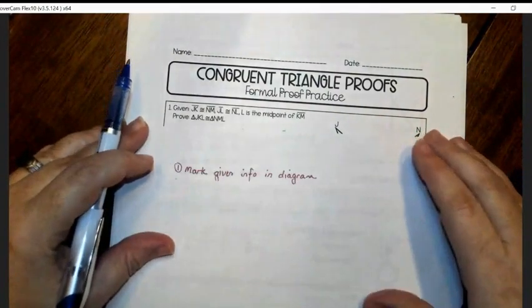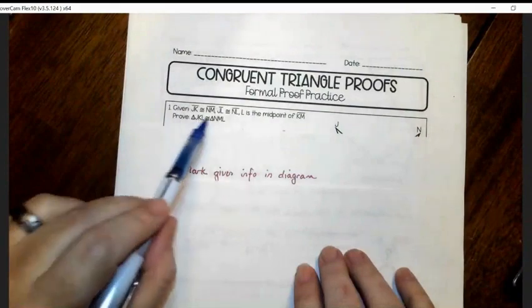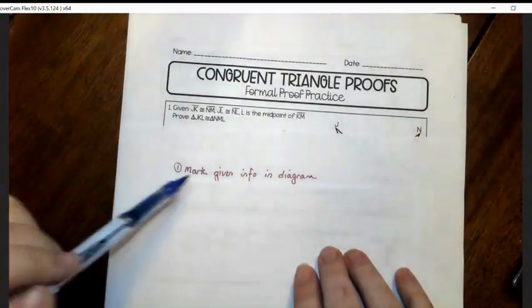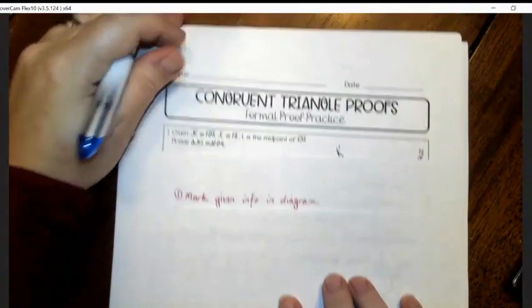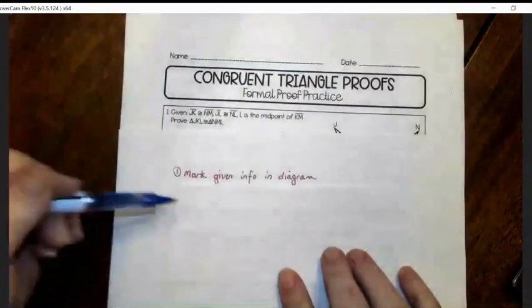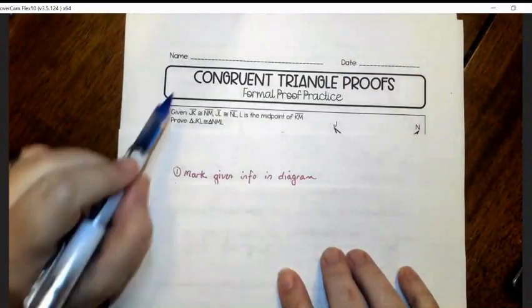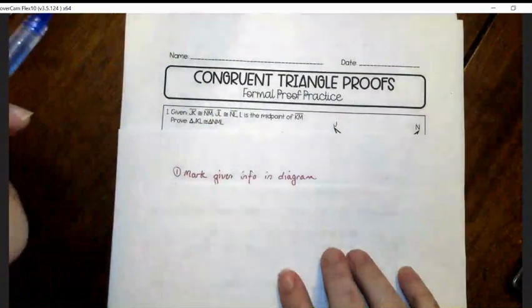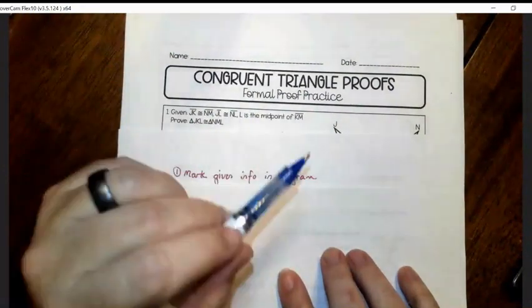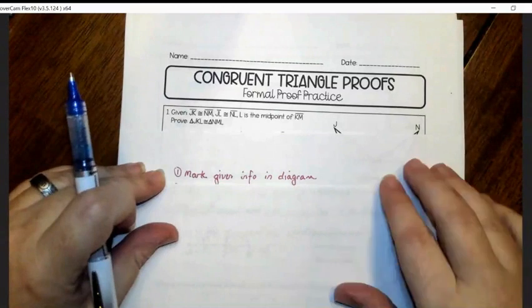So the first step is take the given information and mark it in your picture. I would write this up here at the top of your page where there's a little bit of room to write. There's only four things you're going to have to write. So take the given information and put the tick marks on any sides that are congruent, the arcs on any angles that are congruent. So that's step one.